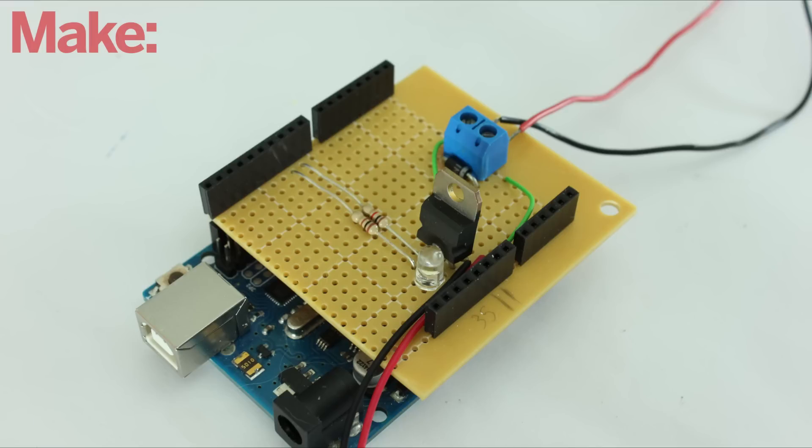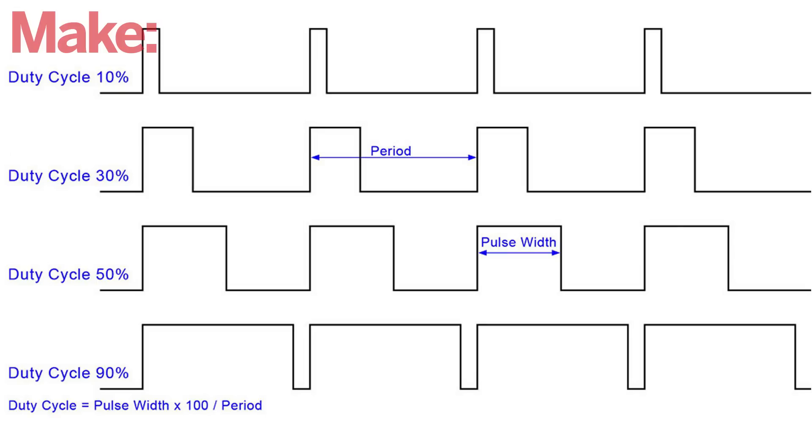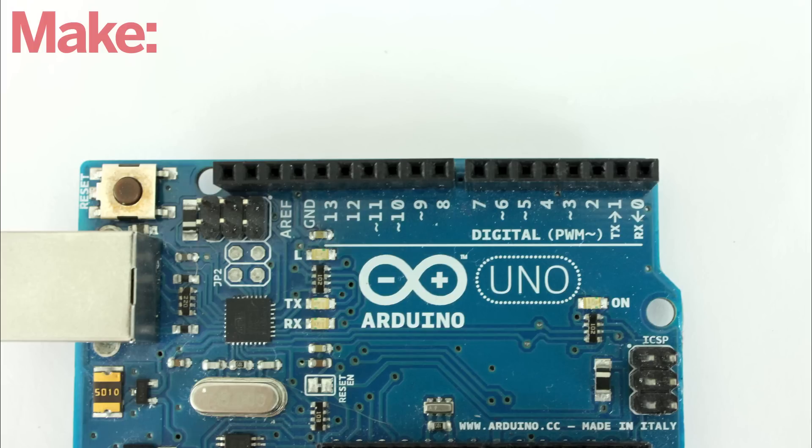As one last example, here's how to make a motor speed controller shield. The simplest kind of speed controller uses a pulse width modulation signal to set the speed of the motor. This signal can be generated by any of the pulse width modulation pins on an Arduino.